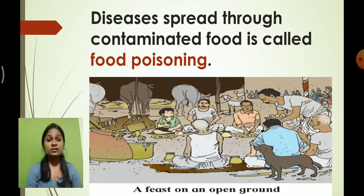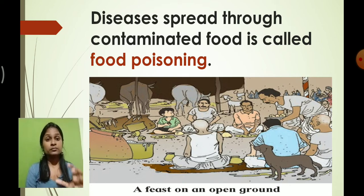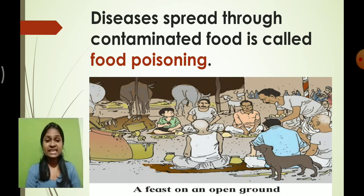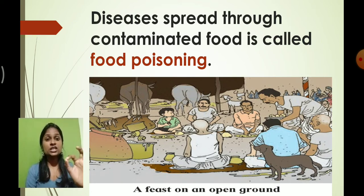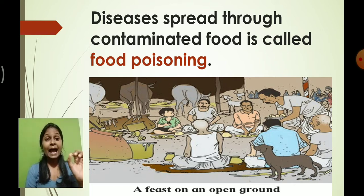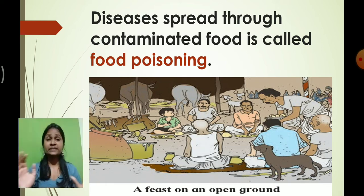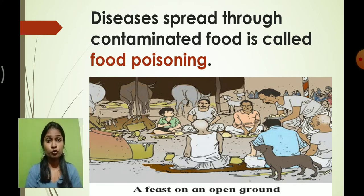We had learnt about how diseases are spread because of contaminated food. There are many types of flies and mosquitoes who sit on the dirt, and when those same flies and mosquitoes sit on food material, the germs from the dirt settle down on the food. If such food is consumed by us, there are chances we might get the disease — this is called food poisoning.